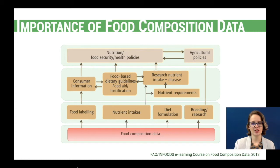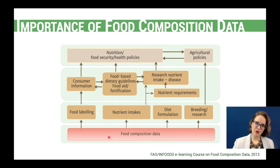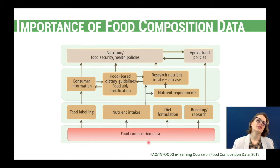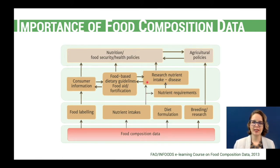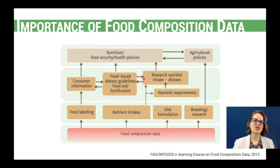Food composition data is the basis for developing many different activities in nutrition. For example, we have food labeling and also diet formulation. We also need food composition data to calculate the nutrient intake of an individual or of the population, and this is the basis for establishing nutrient requirements. They are also very important for research that wants to link nutrient intake with disease, which are the basis for establishing food-based dietary guidelines, food aid, and also food fortification — especially mandatory fortification.